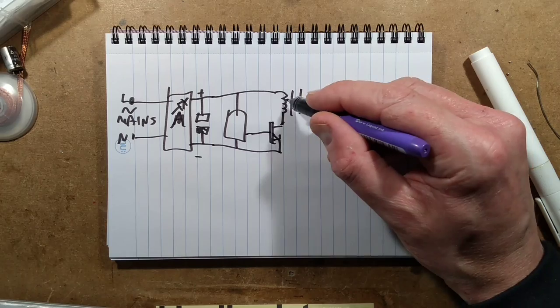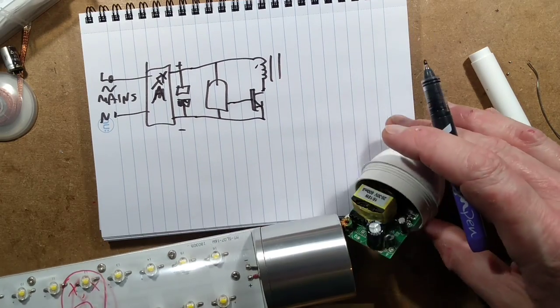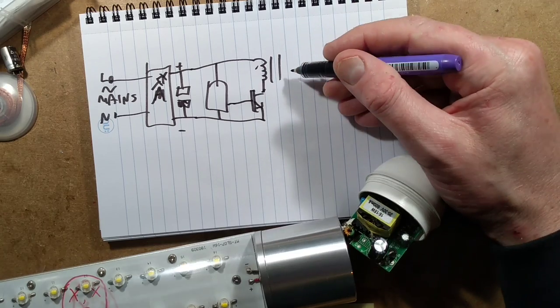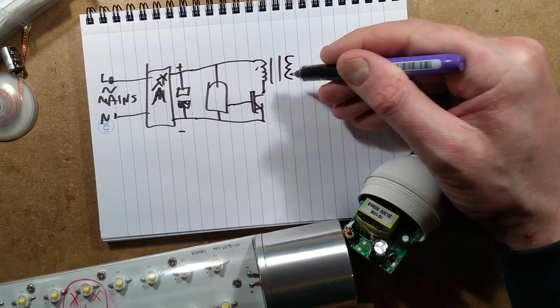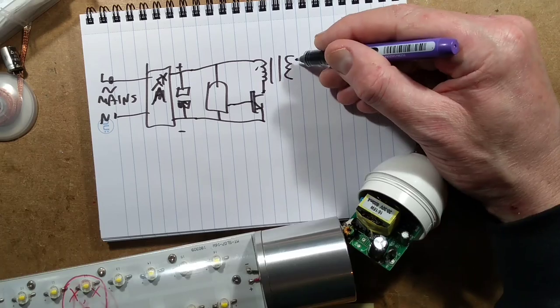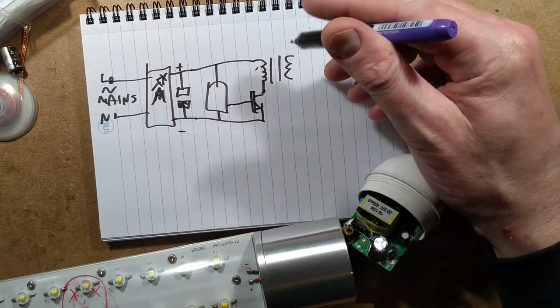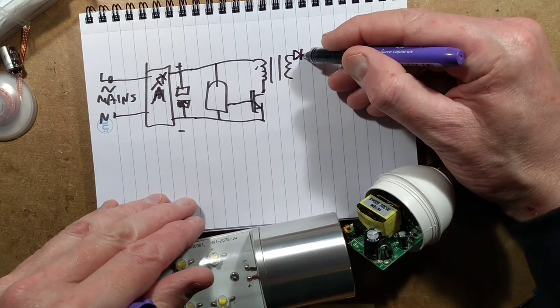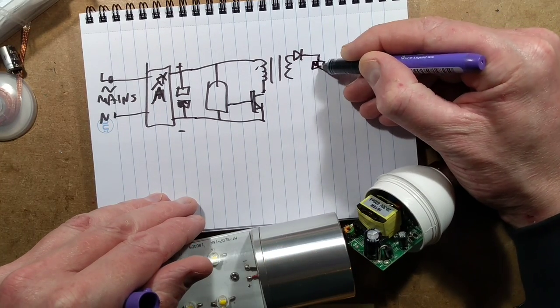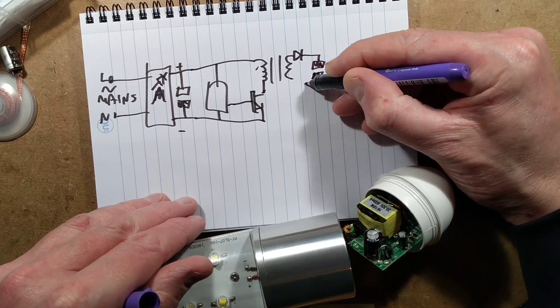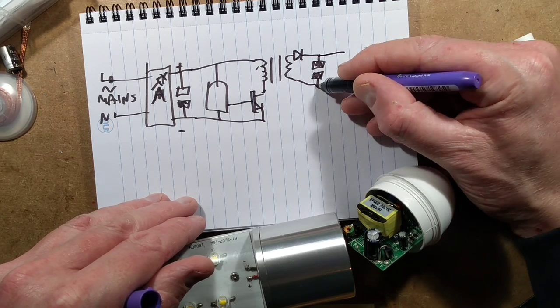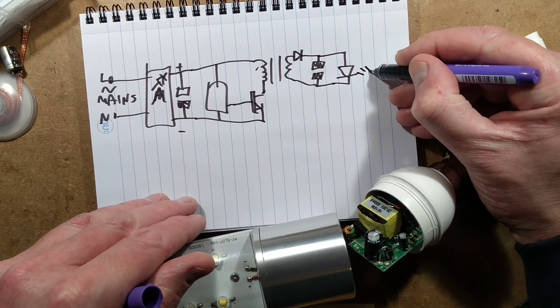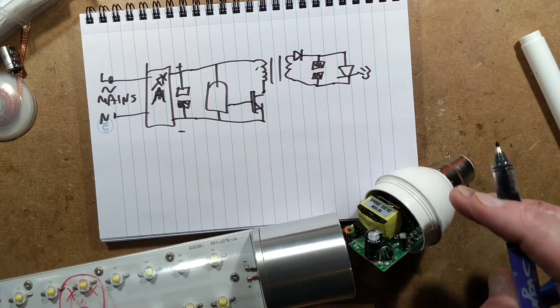What it does is it pulses this transformer on and then turns it off, thousands of times a second. Each time it does it, this transformer gets a magnetic field put into it. And when this turns off, the magnetic field then collapses. In the opposite polarity, when it's collapsing, it then puts current through the diode into a capacitor. That puts a controlled amount of power out which goes to the LEDs.